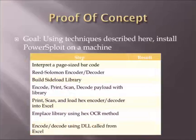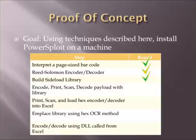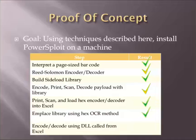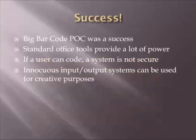I decided to give myself a grade on how this went. My goal was to install PowerSploit on a machine using these methods without using magnetic media. I can interpret a page-sized barcode — yes. The Reed-Solomon encoder/decoder — I made it work, eventually. The sideloading library — built it. I was able to get the payload decoded onto my target machine, except I only scanned a portion of PowerSploit — 3 pages instead of 18. The hex encoder works. I was able to emplace the library using the OCR method, hex-encode my DLL, and drop it on the target machine to read my big barcodes. The proof of concept was a success.